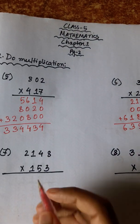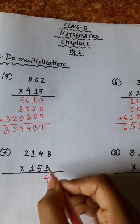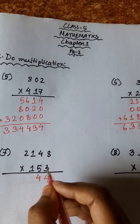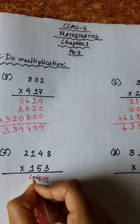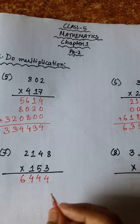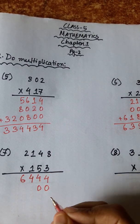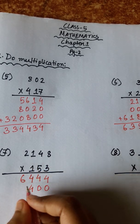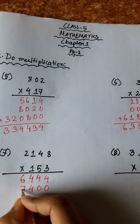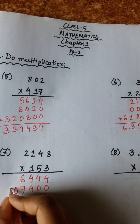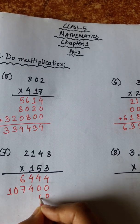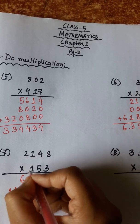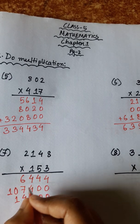Number 7: 8 threes are 24, carry 2. 4 threes are 12, plus 2 is 14. 3 ones are 3, plus 1 is 4. 3 twos are 6. 8 fives are 40, carry 4. 5 fours are 20, plus 4 is 24, carry 2. 5 ones are 5, plus 2 is 7. 5 twos are 10. 8 ones are 8. 4 ones are 4. 1 one is 1. 2 ones are 2.